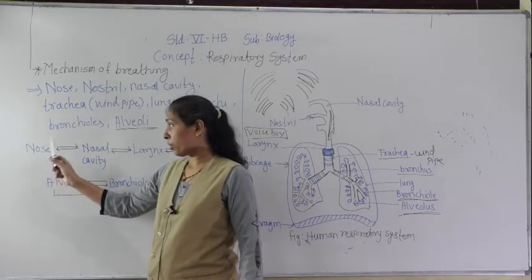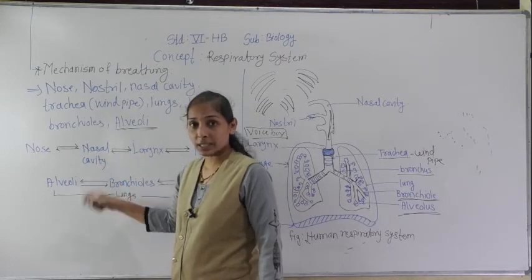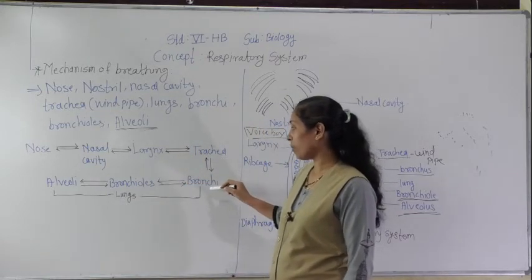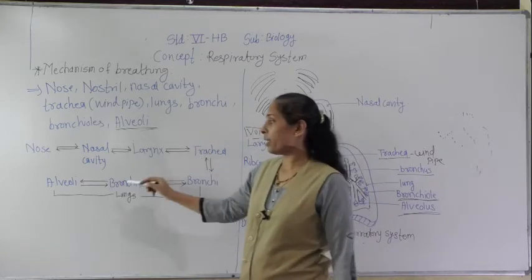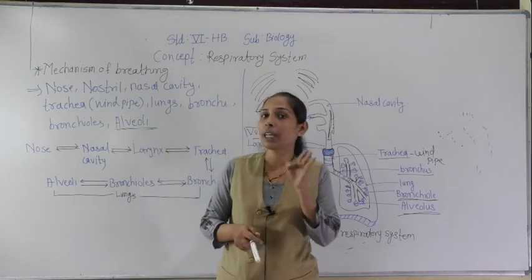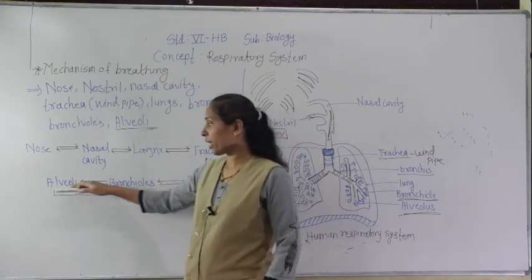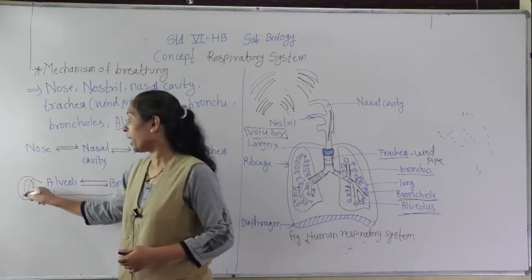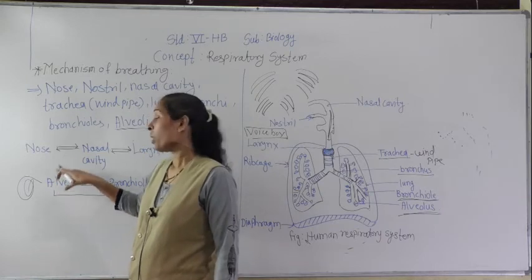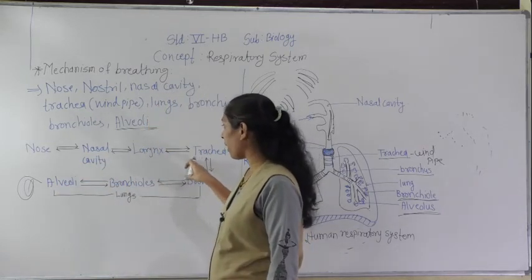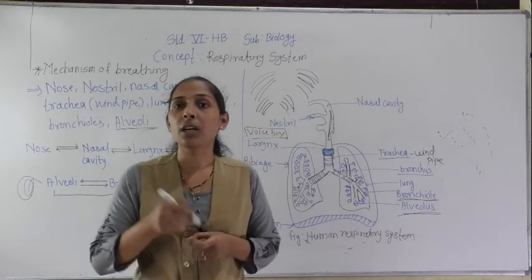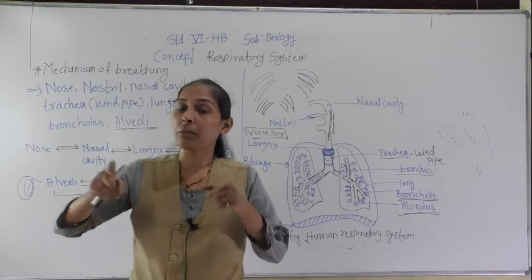Now let's see exactly how air passes through the different organs. From the nose, through the nostrils, we take air inside; it goes into the nasal cavity, then the larynx, then the trachea, then into the bronchi, then the bronchioles, and then the alveoli. In reverse, carbon dioxide from the blood comes into the alveoli, then bronchioles, bronchi, trachea, larynx, nasal cavity, and through the nose we exhale that carbon dioxide-rich air.